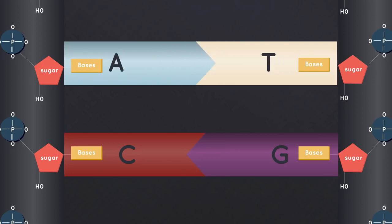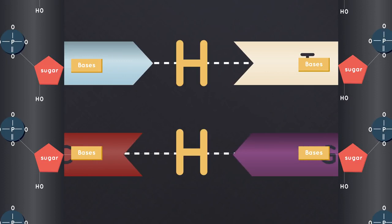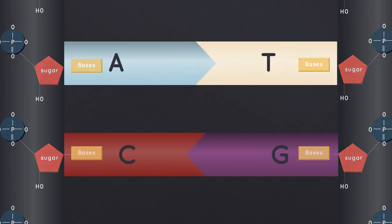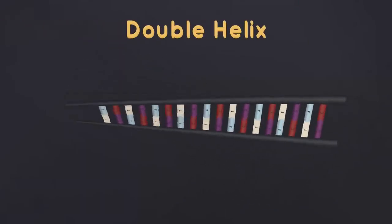Because A and T bases pair up and C and G bases pair up. The bases pair up forming hydrogen bonds and the DNA forms a twisted shape that is known as a double helix.